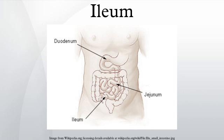The DNES cells of the ileum secrete various hormones into the blood. Cells in the lining of the ileum secrete protease and carbohydrate enzymes responsible for the final stages of protein and carbohydrate digestion into the lumen of the intestine. These enzymes are present in the cytoplasm of the epithelial cells. The villi contain large numbers of capillaries that take the amino acids and glucose produced by digestion to the hepatic portal vein in the liver.